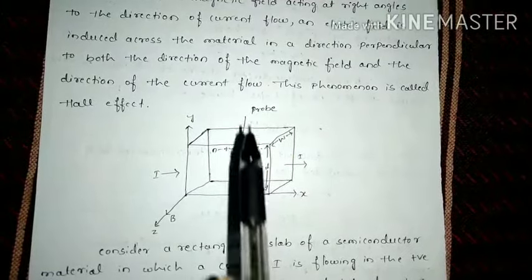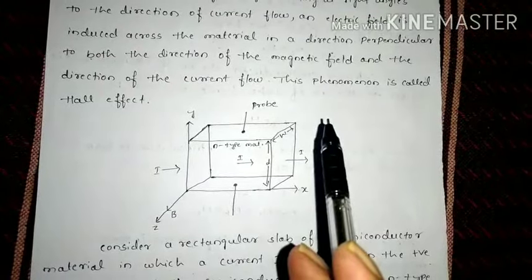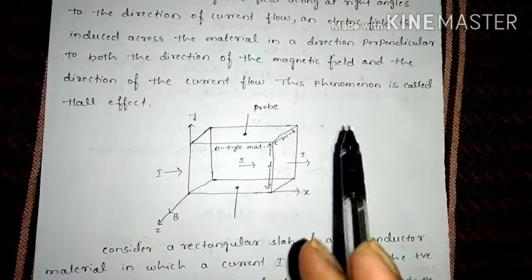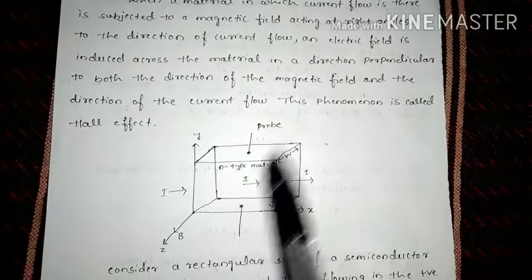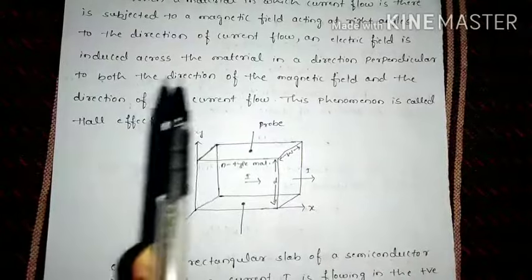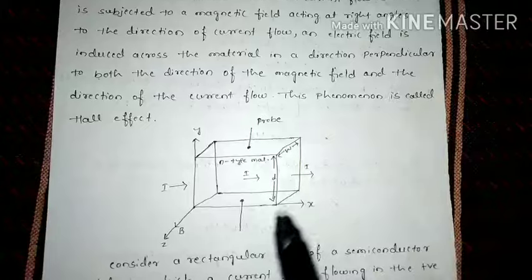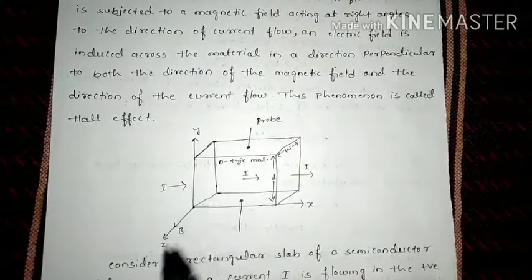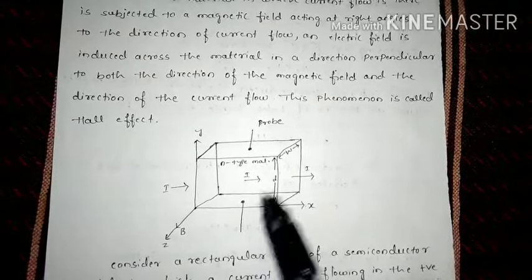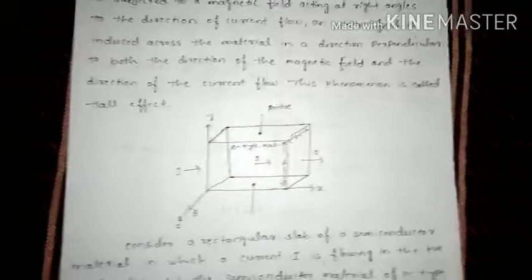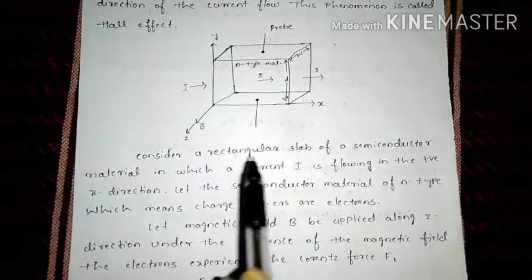After applying the magnetic field, if you connect a voltmeter across the upper and lower surface and measure the voltage, you will find a small potential which was not present before. This electric field induced across the material, perpendicular to both the direction of current and the direction of the magnetic field, is called the Hall effect.